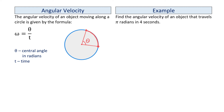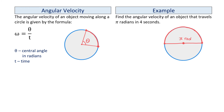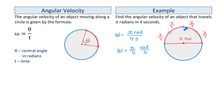Let's find the angular velocity of an object that travels pi radians in 4 seconds. We start with a circle and draw the angle of pi radians, which is the same as 180 degrees. So if the object starts at this point, it will complete half of a rotation. Omega equals pi radians divided by 4 seconds, giving an angular velocity of pi over 4 radians per second. This means every second the object travels pi over 4 radians, and it takes 4 seconds to complete half of this rotation.